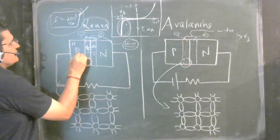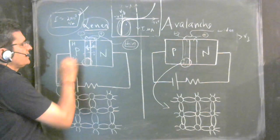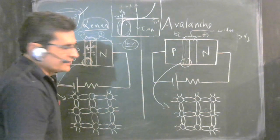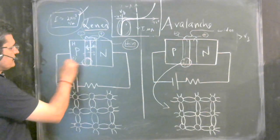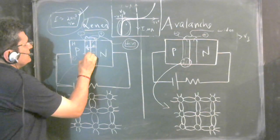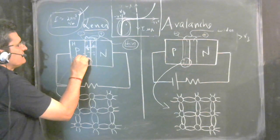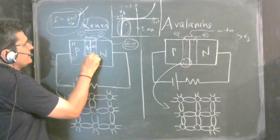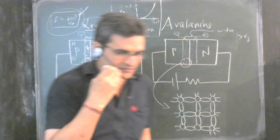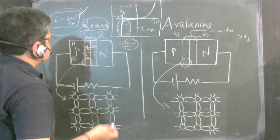In the case of reverse bias voltage, it is the minority carriers which produce the current. On the P side, electrons are the minority carriers, and holes are the minority carriers on the N side. Because of the reverse voltage, the electrons on the P side have a tendency to cross over to the N side and produce the current — that is the reason why there is current flow when reverse bias voltage is applied.